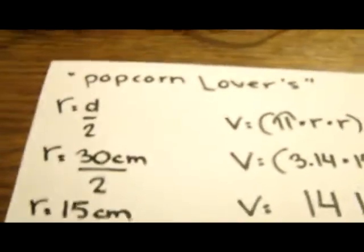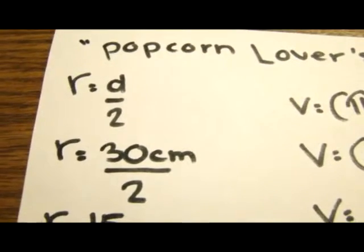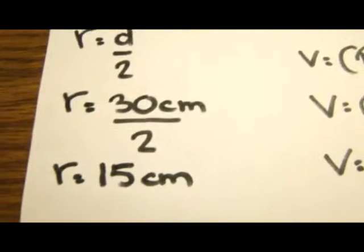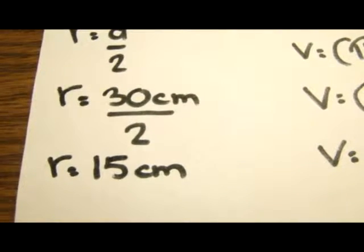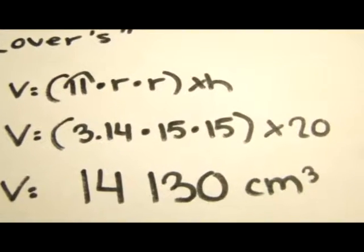So I did the same thing to the other container, the Popcorn Lover's container. I found the radius by dividing the diameter by 2, so I divided 30 centimeters by 2 to get 15 centimeters as my radius.